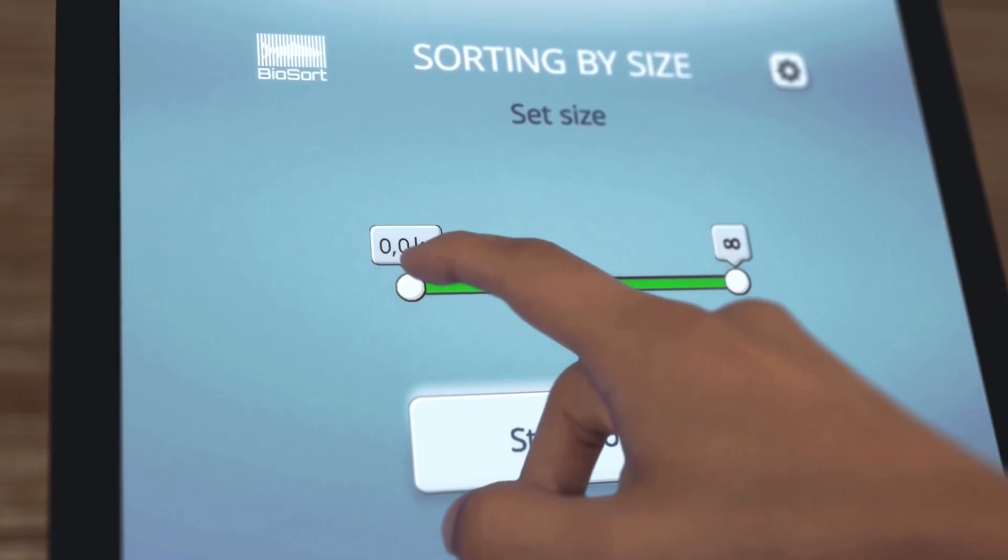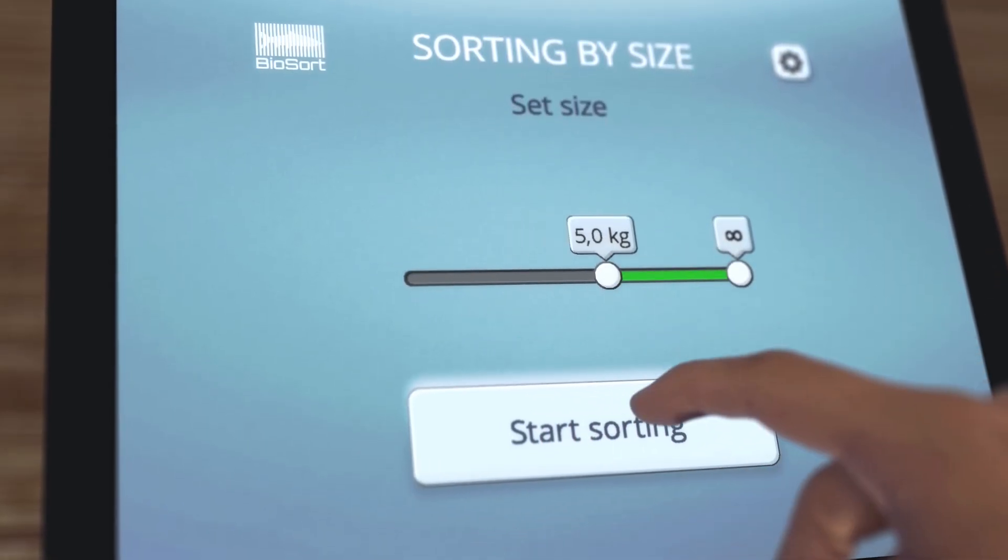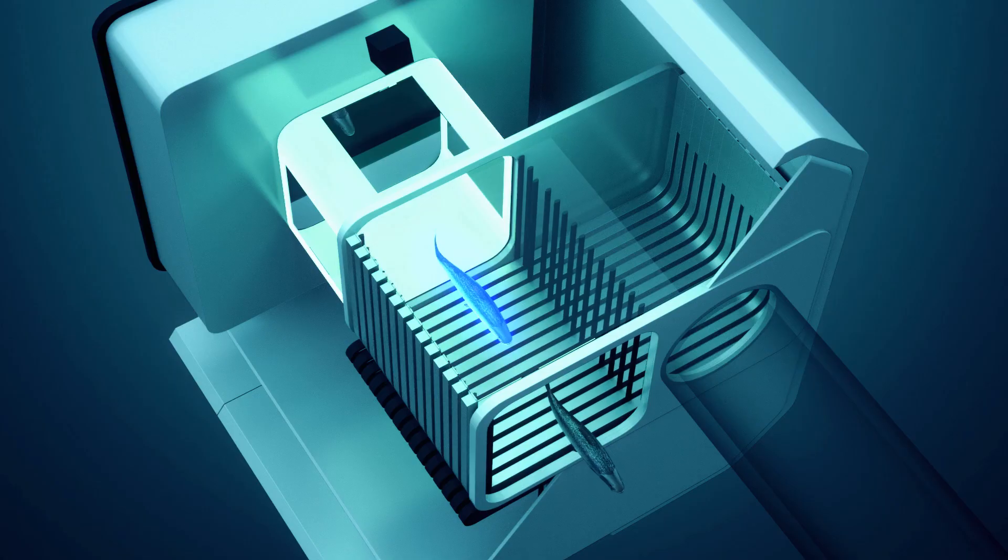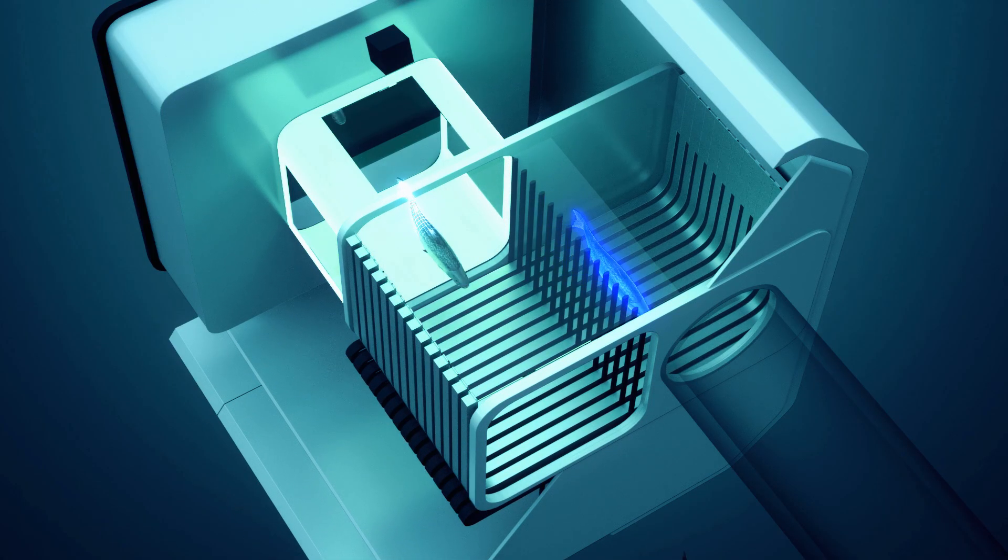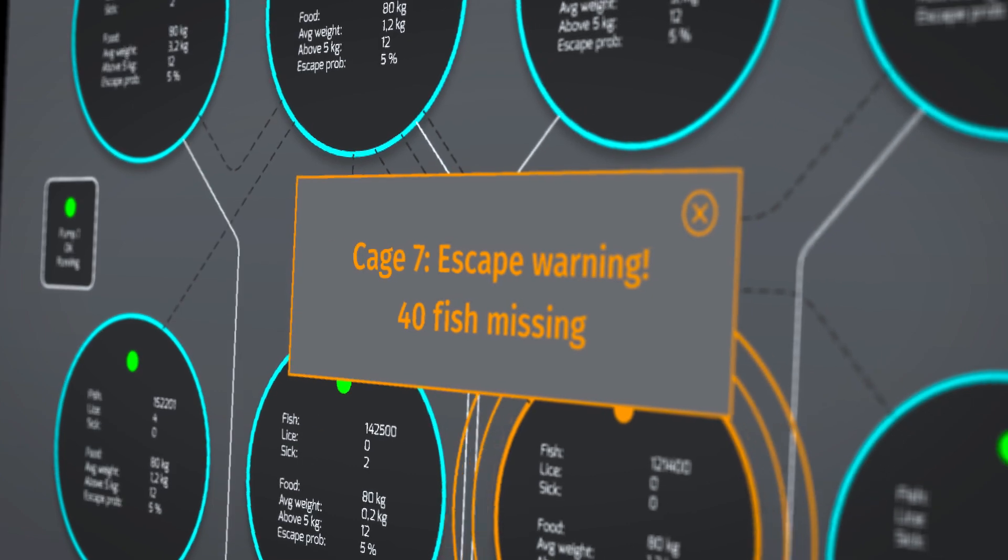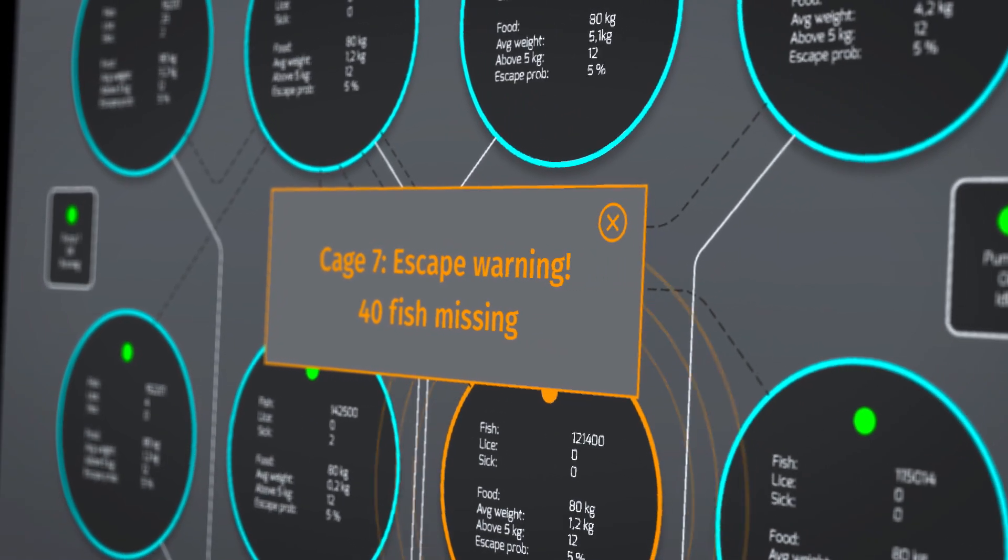iFarm can sort fish by weight and size. Fish above 5kg can be sorted to a separate cage for processing. A warning system detects if fish are missing and makes immediate action possible.